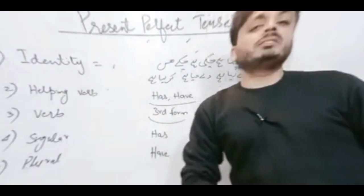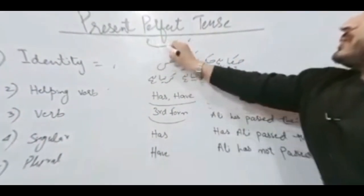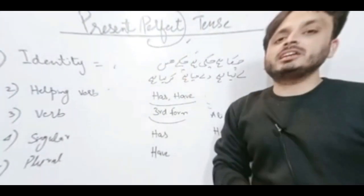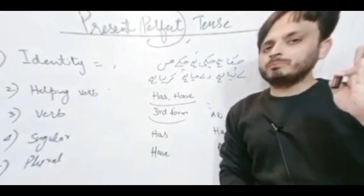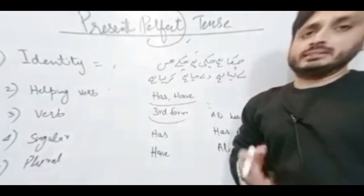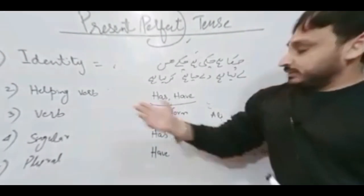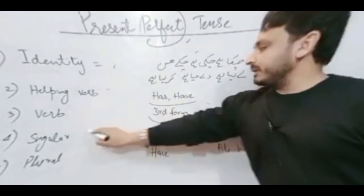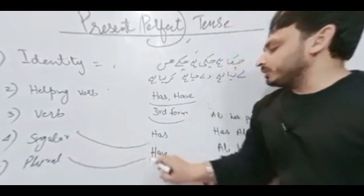Remember this in your mind: if there is any tense which has the word 'perfect' — present perfect, past perfect, or future perfect — any tense with the word perfect, you will have to use only the third form of verb. In present perfect we will use the third form of verb.